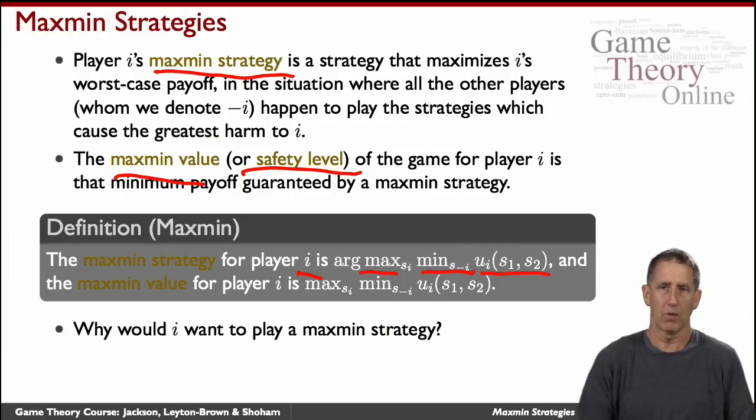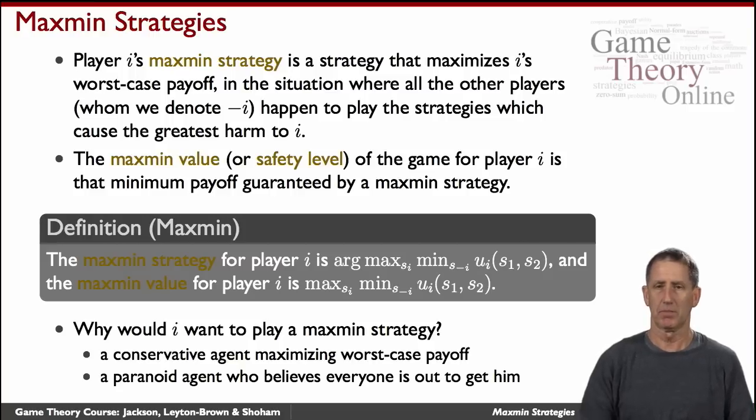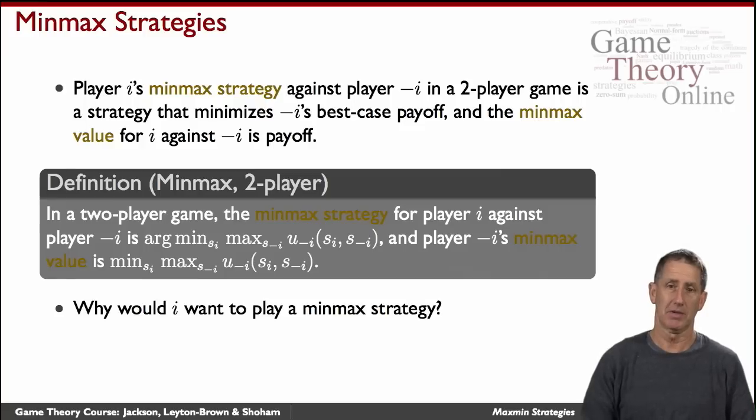Why would we want to think about the maxmin strategy? One can think of it either as simply a certain cautionary approach. Maybe the other people will make some mistakes and not act in their own best interest. Maybe I'm not sure exactly what their payoffs are. There are a lot of interpretations, or you can simply be paranoid about them and think that they're out to get you. And you know the saying, even the paranoid have enemies. That's the maxmin strategy.